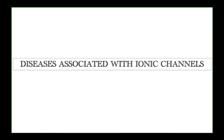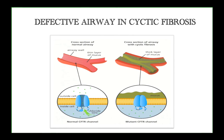Diseases associated with ionic channels: irregularities in channel proteins cause disease. One such disease is cystic fibrosis, which affects multiple organs. In a normal airway passage the channel is smooth, allowing airflow. In cystic fibrosis, the CFTR channel does not allow movement of chloride ions, resulting in thick mucus developing on the inner airway and stopping normal airflow.